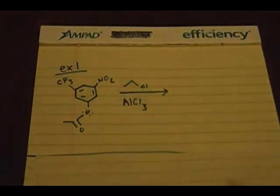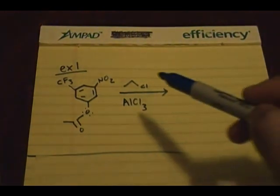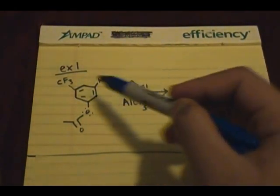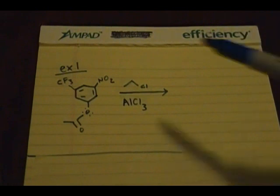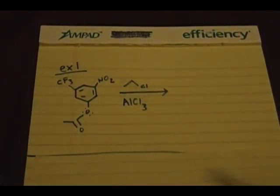You have an aromatic ring, you have this electron donating group, you have this electron withdrawing group right here, and you're trying to do a Friedel-Crafts alkylation. The best thing to do is pause the video and try to do it on your own and see what product you'll get. I'll give you guys 5 seconds if you need to.